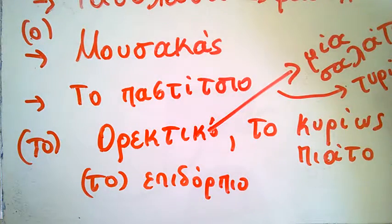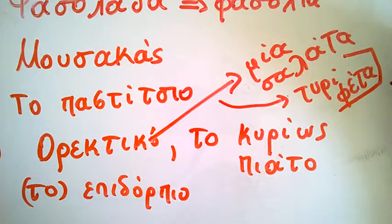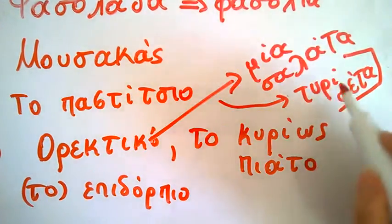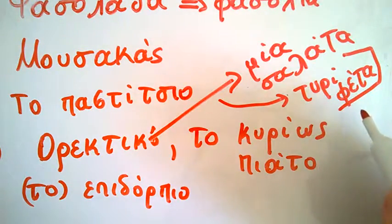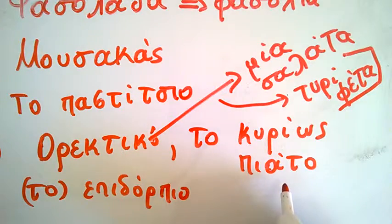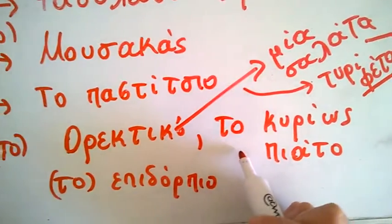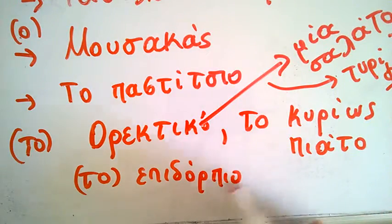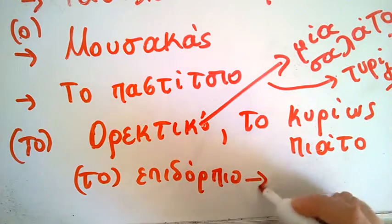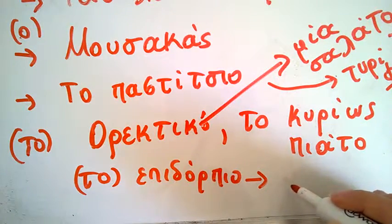Feta, which is cheese made by goats and sheep. To kirios piato, to kirios piato - fasolada, moussaka, o moussaka. To epidorpio might be a homemade sweet.